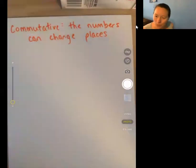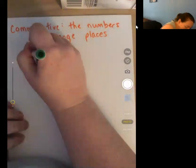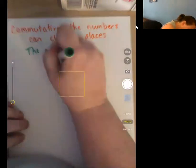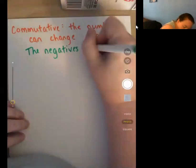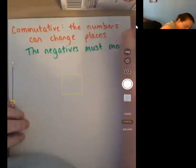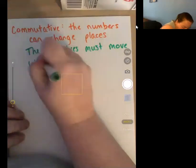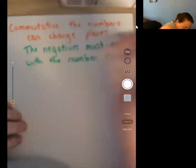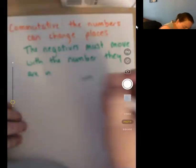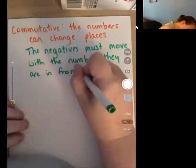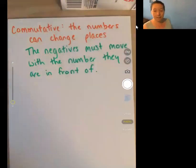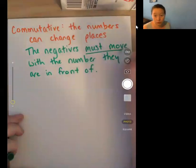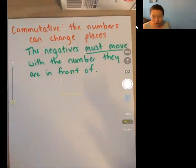Two plus five is equal to five plus two. No problems, right? Once again, we have to worry about our negative numbers. The negatives must move with the number they are in front of. They must move. They cannot stay where they are. That is wrong.